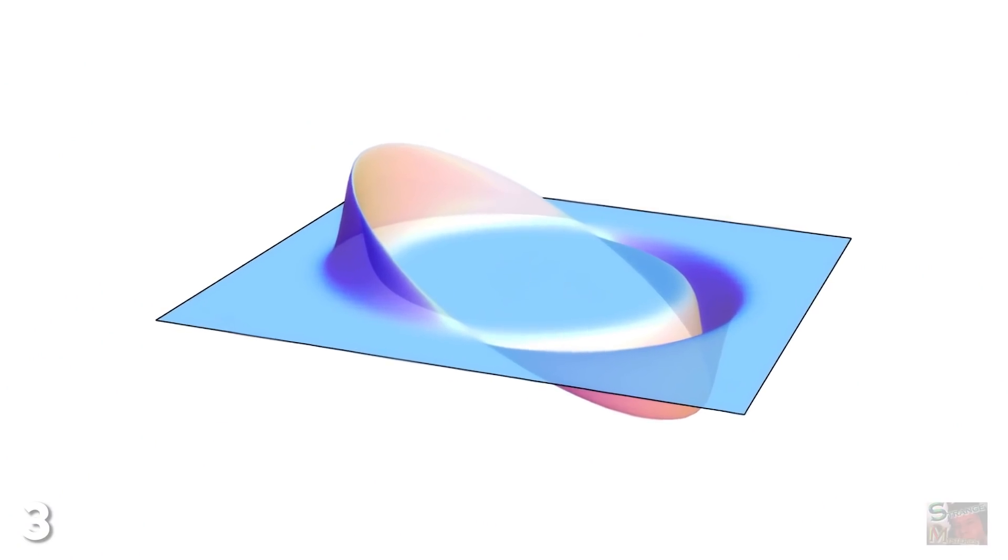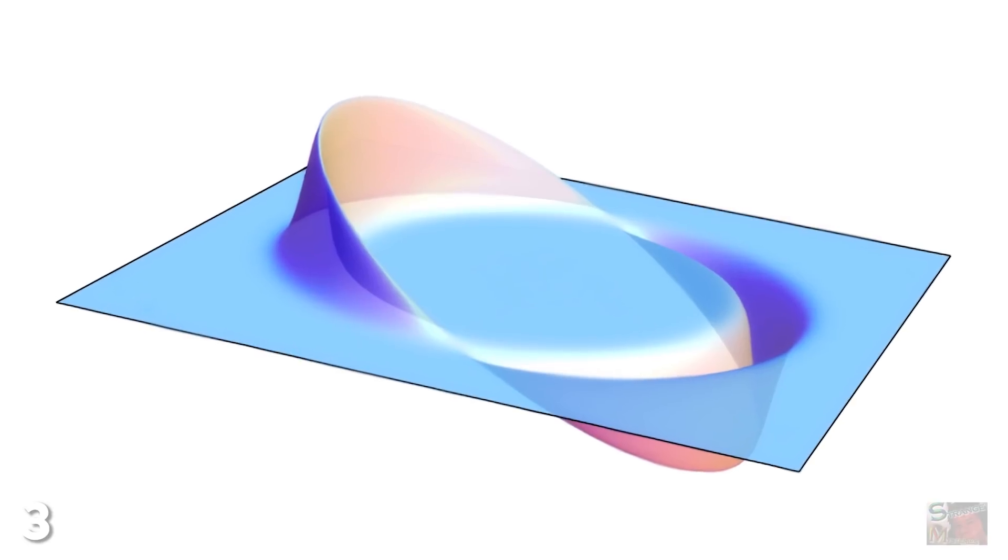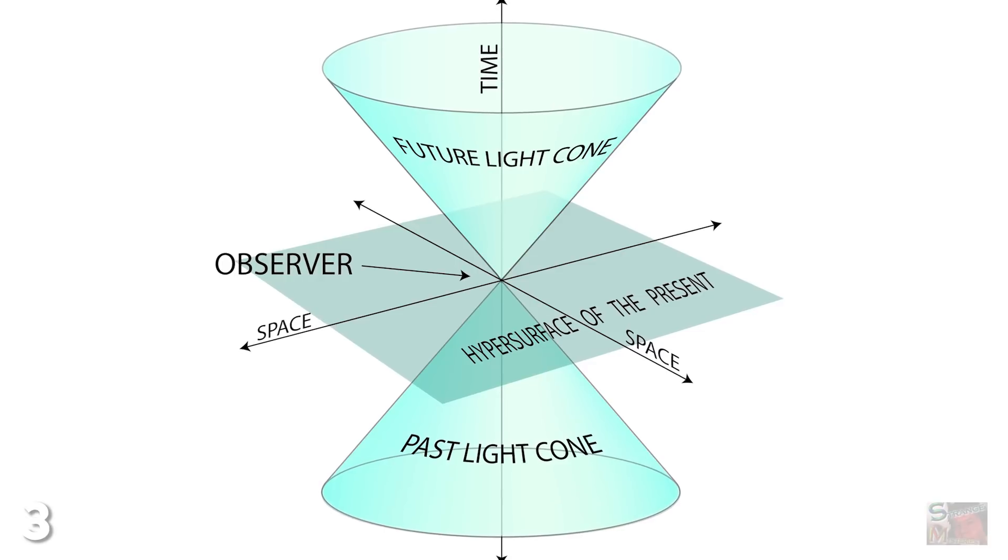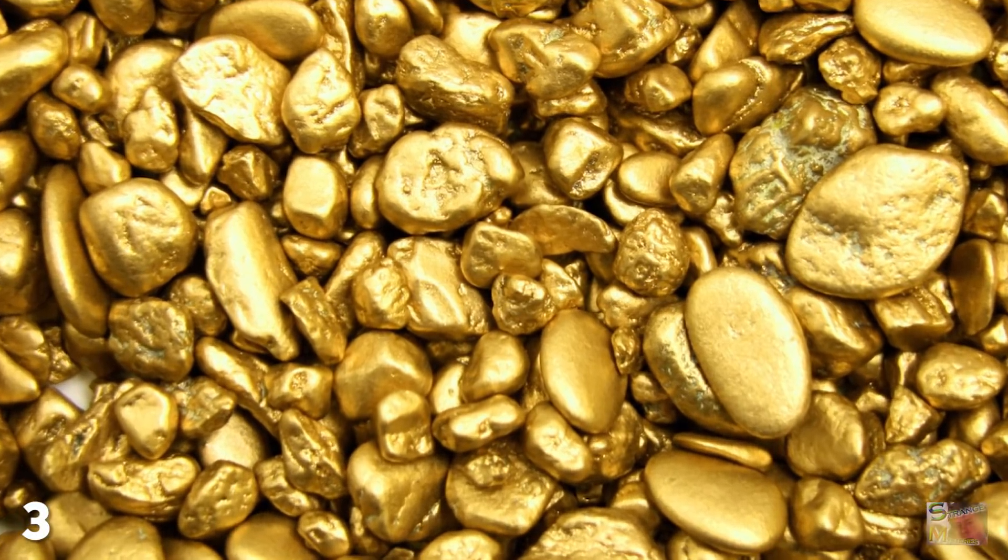Number 3. The Alcubierre Drive. The theory of special relativity forbids any object from moving at light speed. It doesn't matter how small it is,